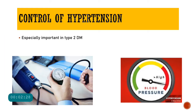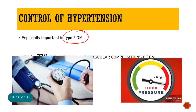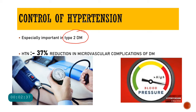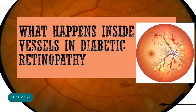What about hypertension? Controlling blood pressure is very important, especially when we talk about type 2 diabetes mellitus. A control of hypertension can actually bring down microvascular complications of diabetes mellitus by about 37% — quite a significant figure.